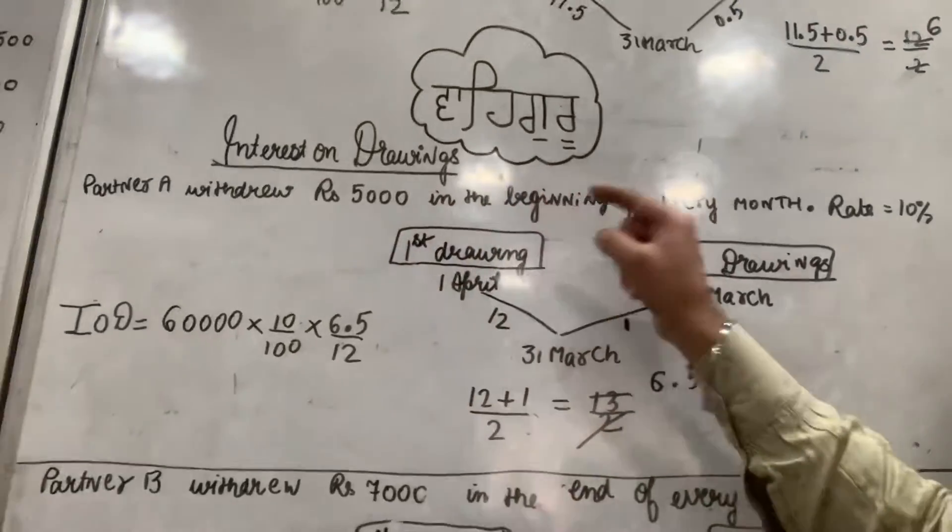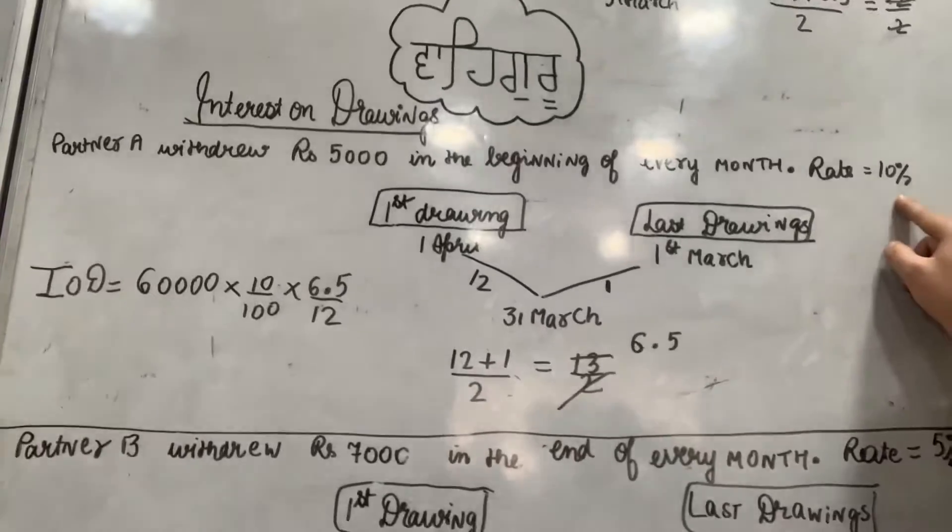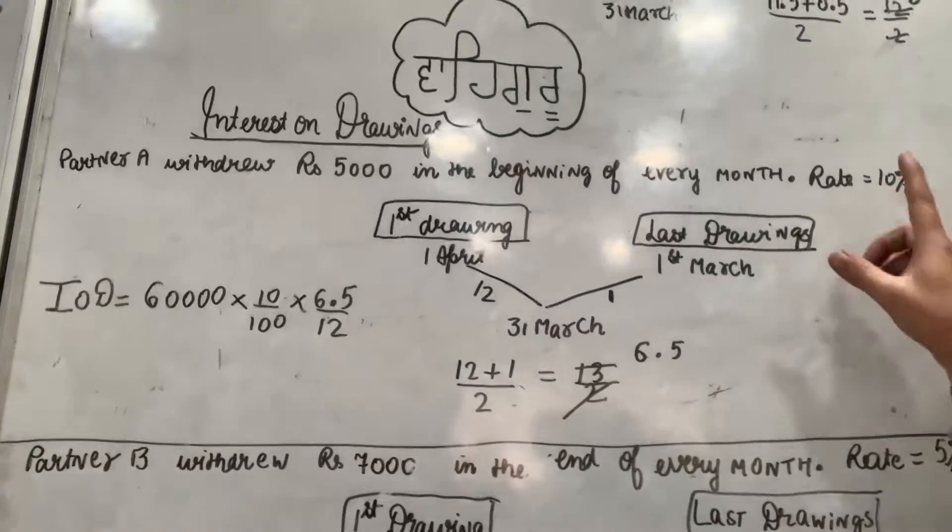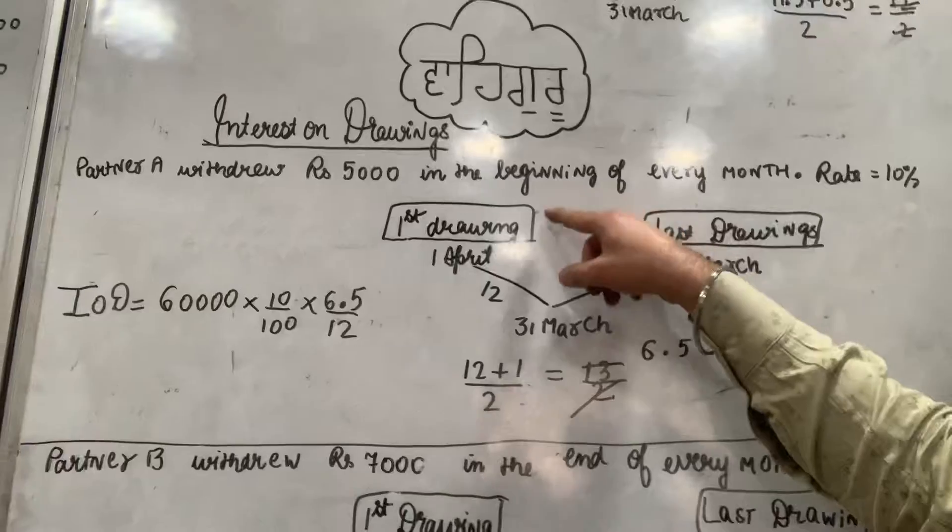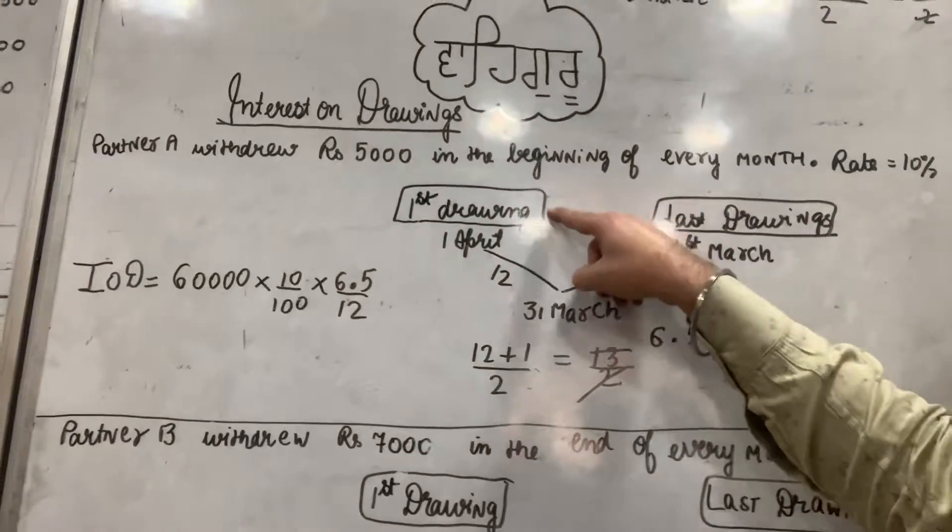Partner A withdraws Rs. 5000 in the beginning of every month, rate of drawings at 10%. Aapne jab bhi aise question hoon ge na, pehle aapne dekhna hai in the beginning of every month bola hai.